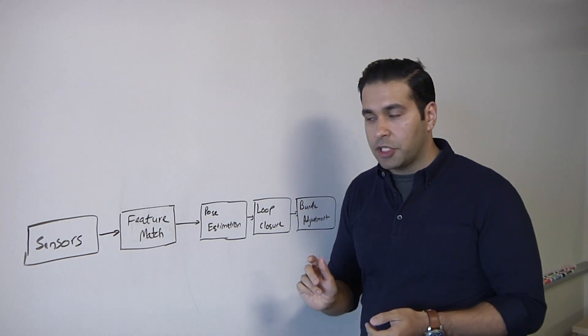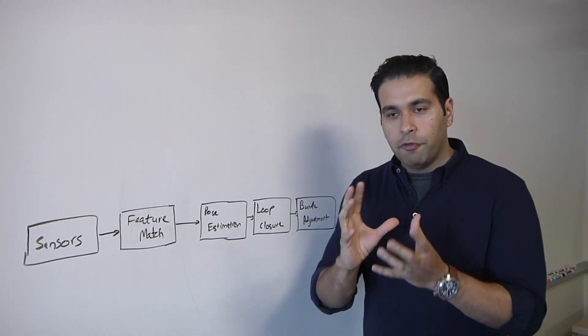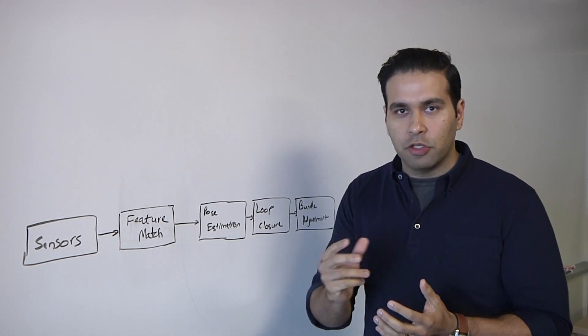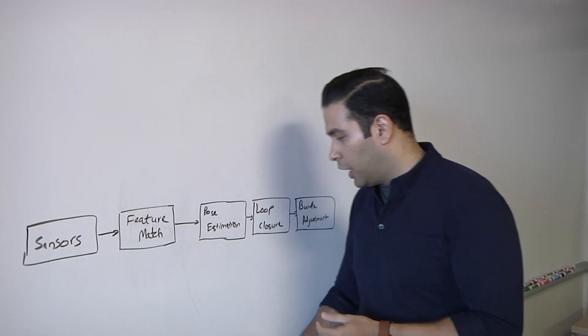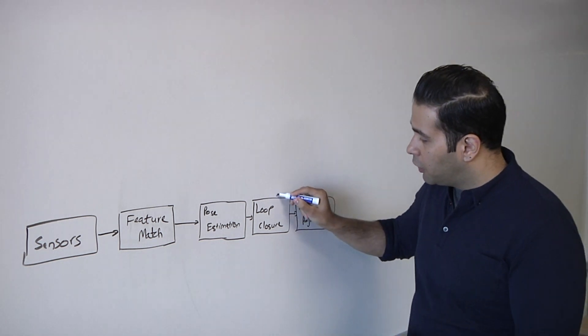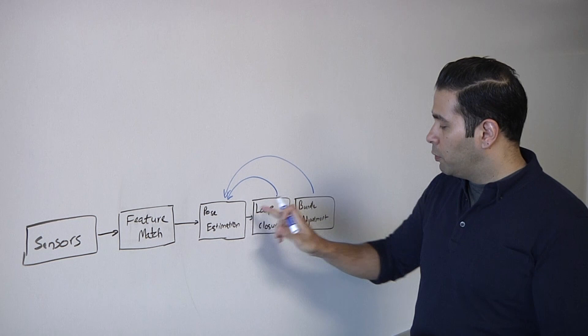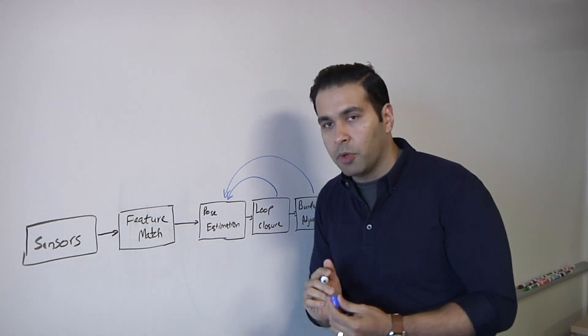So, it's not a new area that it has to determine. And then, bundle adjustment is a common step that is used to further refine the aggregation of errors once you do a loop closure. Now, typically, what you would see over here is a feedback step, which would come from either loop closure or bundle adjustment coming to pose estimation.